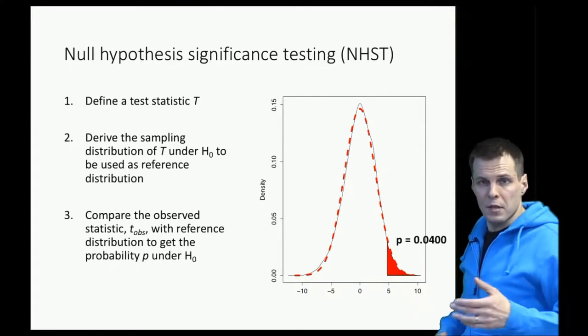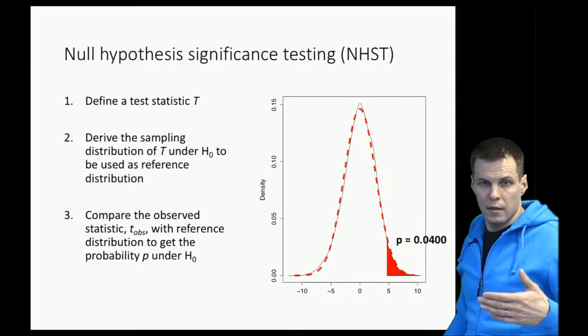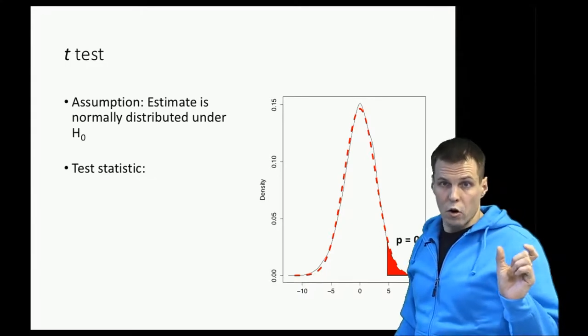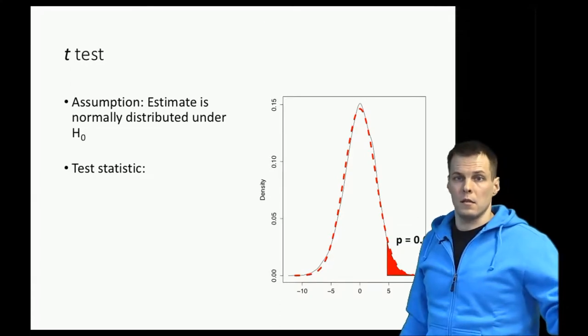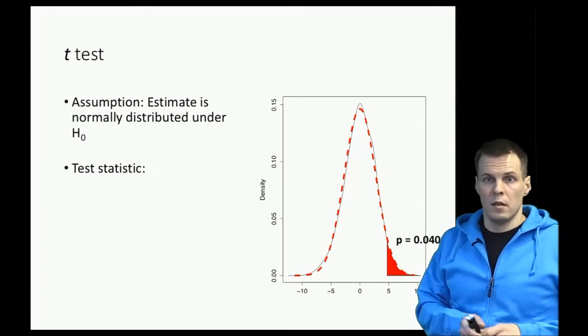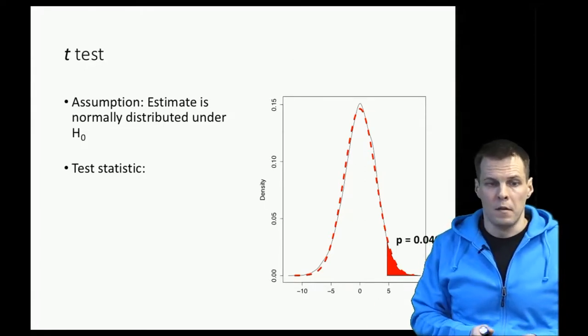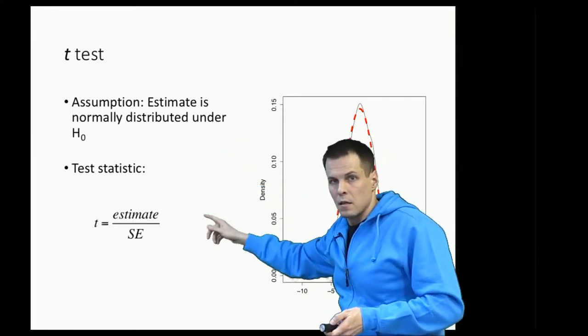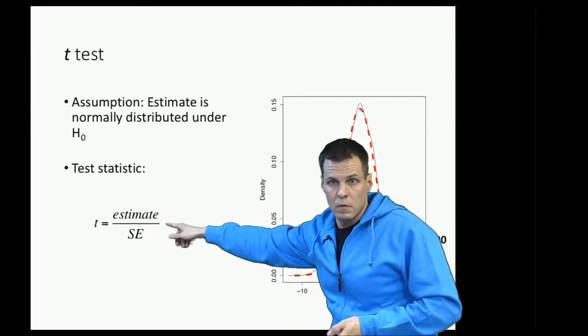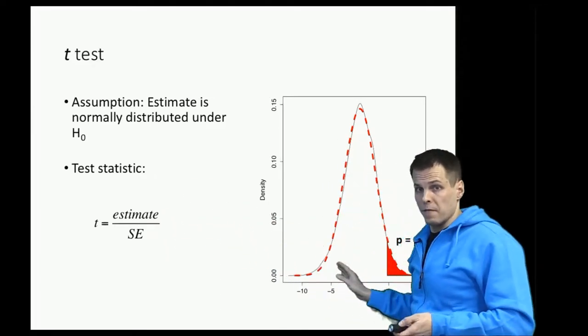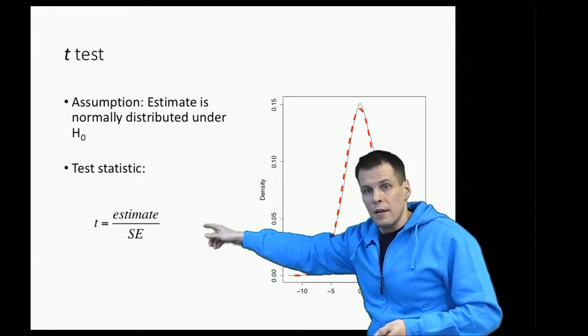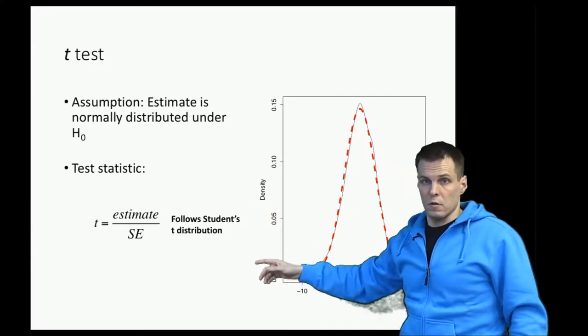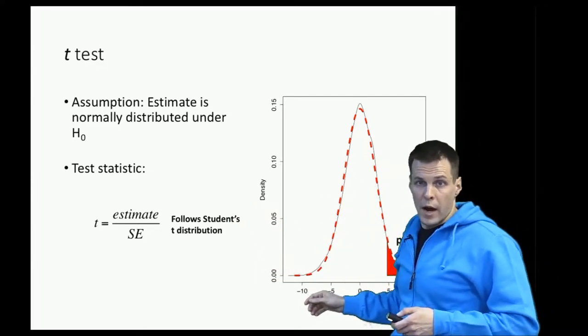The simplest test using null hypothesis significance testing is the t-test. The idea is that it assumes the estimates are normally distributed over repeated samples, as is the case when we compare two means. The difference of two means is normally distributed when the sample size is large enough. The test statistic is estimate divided by standard error. So instead of looking at how far the estimate is from the null hypothesis value of zero, we look at how far the estimate divided by standard error is from zero. This follows Student's t-distribution, which looks like a normal distribution but is a bit wider in small samples.